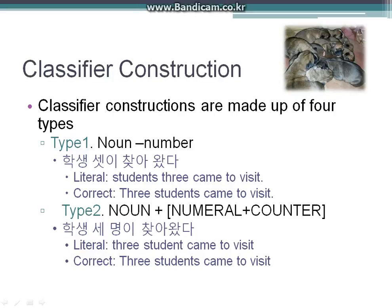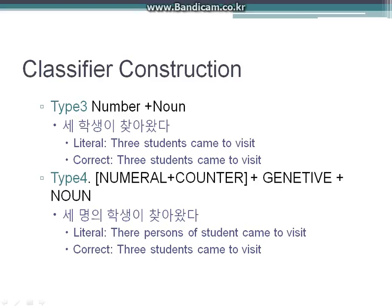Next is classifier construction. Classifier constructions are made up of four types. Type 1 is noun plus number. Type 2 is noun plus numeral plus counter. Type 3 is number plus noun. Type 4 is numeral plus counter plus genitive plus noun.